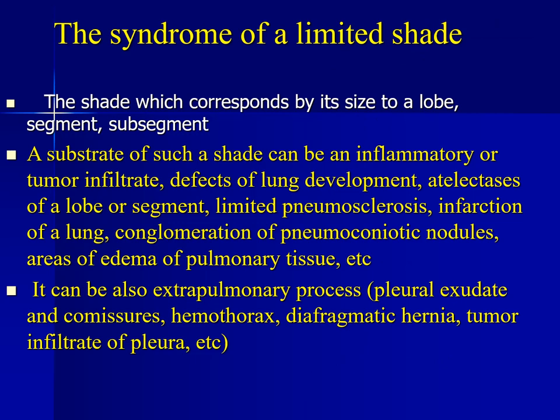The syndrome of a limited shade corresponds by its size to a lobe, segment, or sub-segment. Its substrate can be an inflammatory or tumour infiltrate, defects of lung development, atelectasis of lobe or segment, limited pneumosclerosis, infarction of lung, conglomeration of pneumosclerotic nodules, areas of oedema of pulmonary tissue. It can also be an extra-pulmonary process — pleural exudate and commissures, haemathorax, diaphragmatic hernia, or tumour infiltrate of pleura.